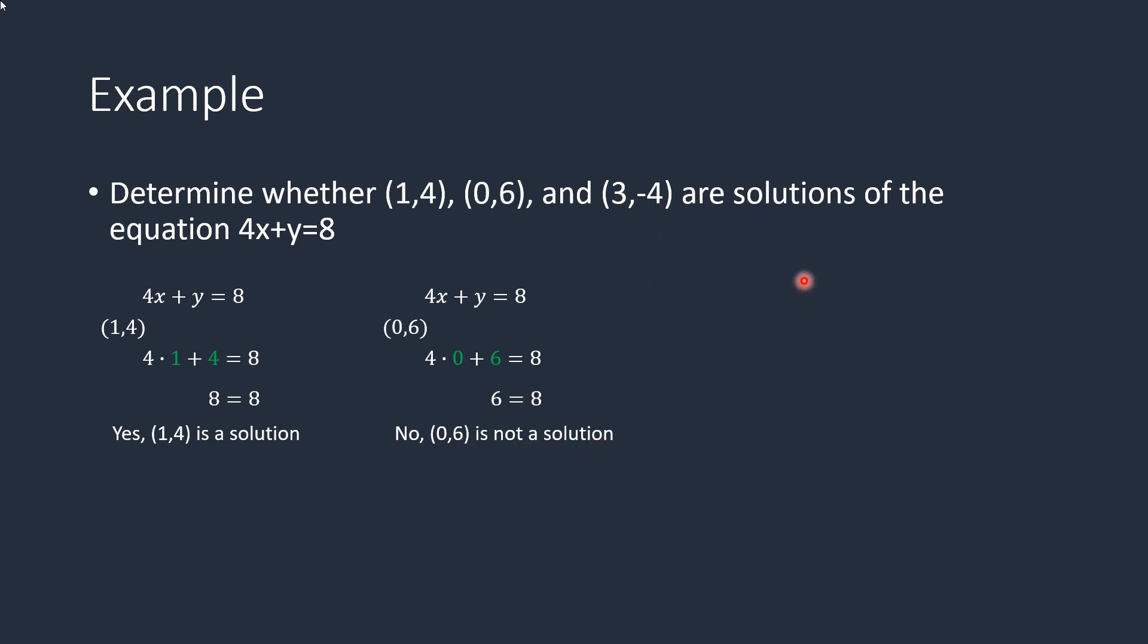Let's look at that last one. 4x + y = 8. And then our point is (3,-4). Let's plug that in. 4 times 3 plus a negative 4. That would be 12 minus 4. 8, 12 minus 4, which is 8 equals 8. So yes, (3,-4) is a solution, and therefore it's a point on the line.